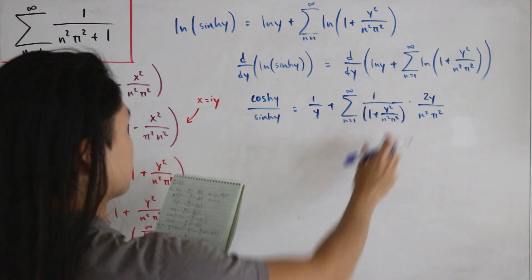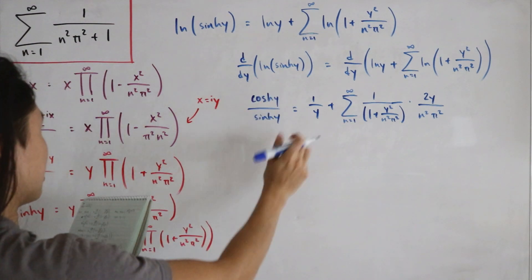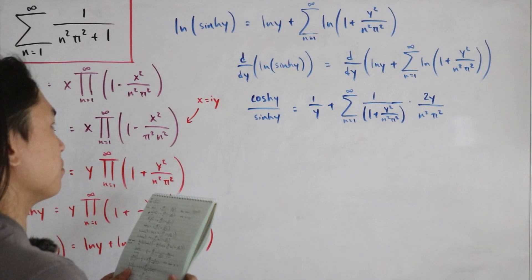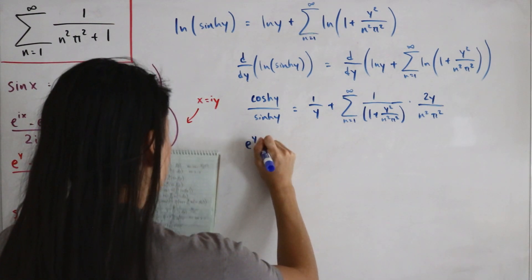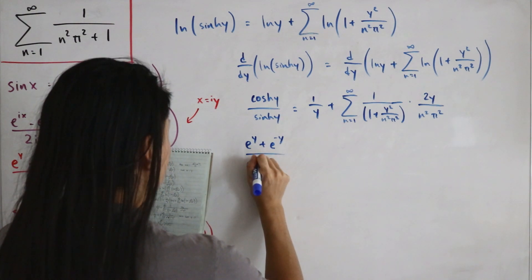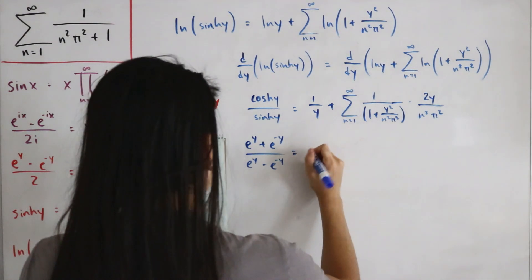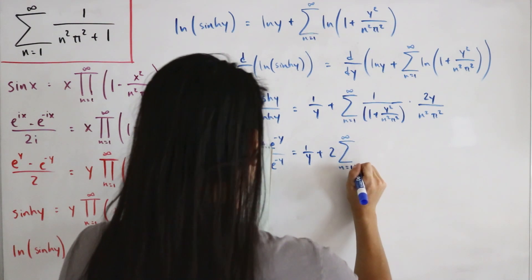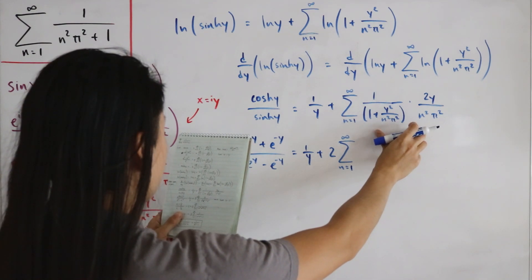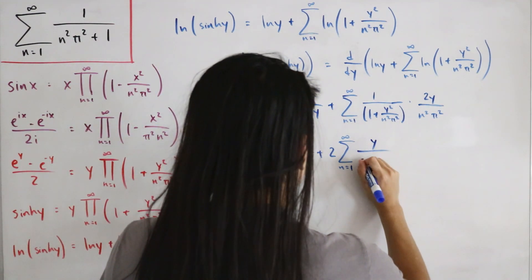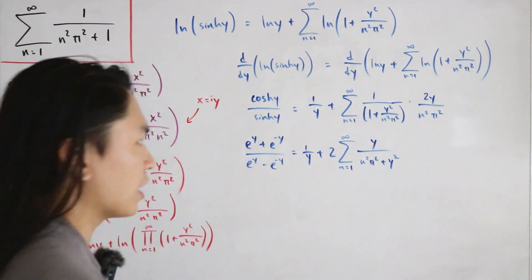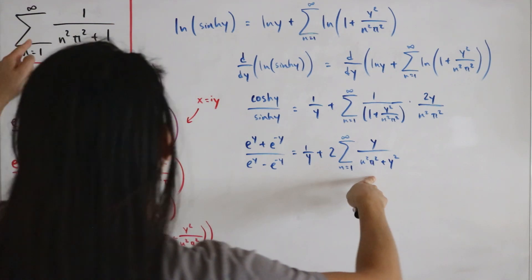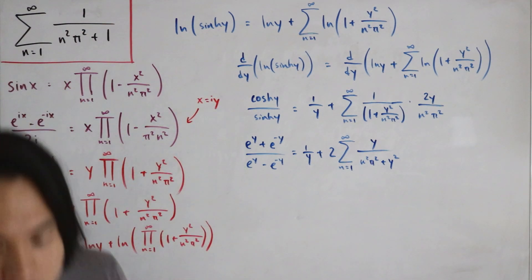We can use the hyperbolic cotangent identity: cosh(y) over sinh(y) equals (e^y plus e^(-y)) divided by (e^y minus e^(-y)). Simplifying the right side, we get 1 over y plus 2 times the infinite sum from n equals 1 of y divided by (n squared pi squared plus y squared). We can see this is getting close to the form we want to solve.